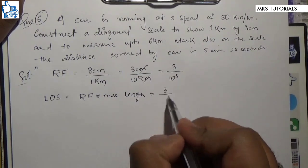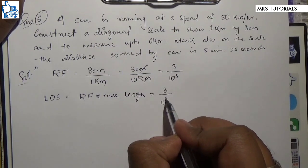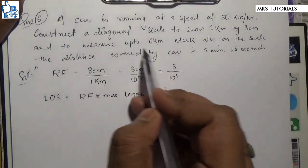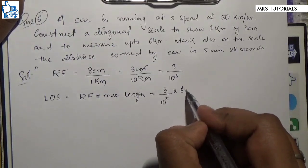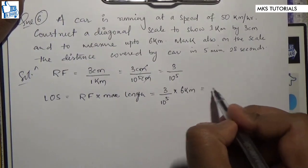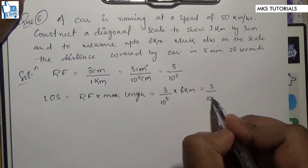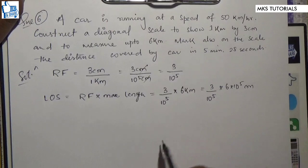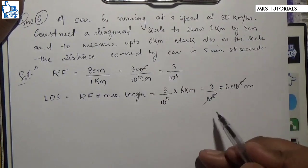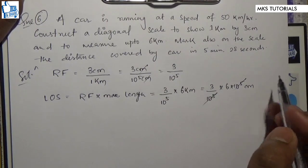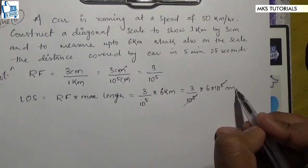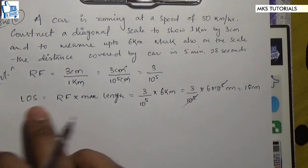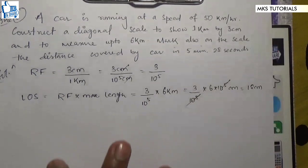So RF is 1/10^5, maximum length is to measure up to 6 km. So 1/10^5 into 6 into 10^5, this is the length of scale. It's about 18 cm.